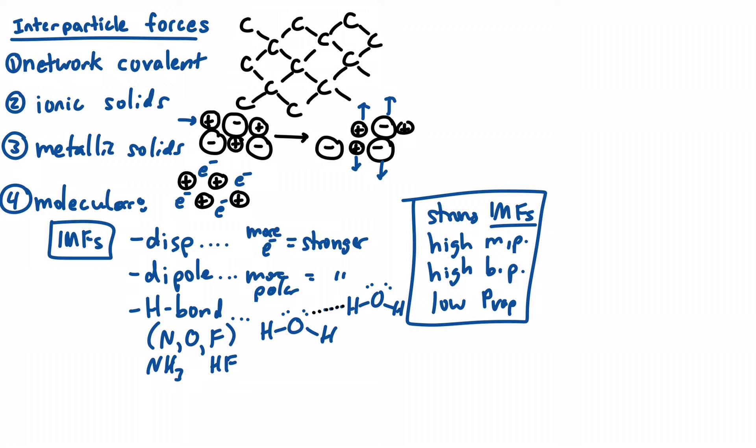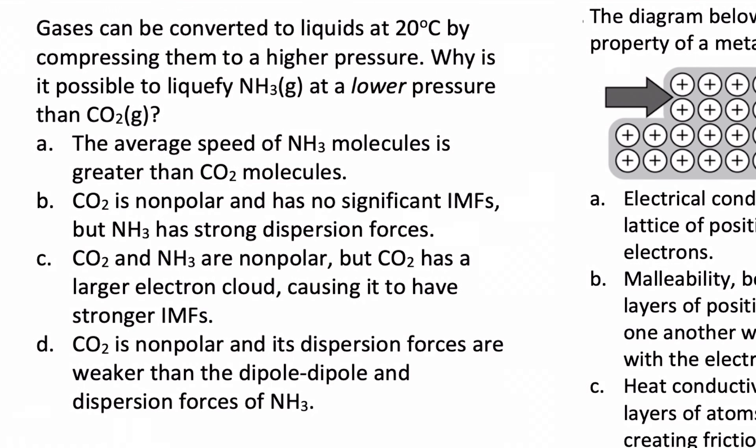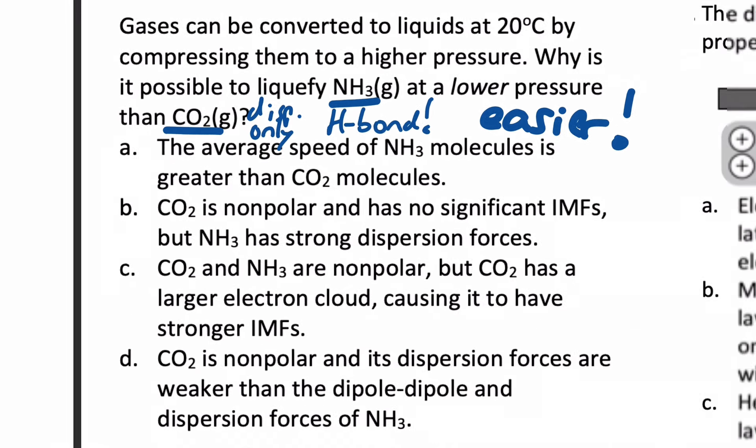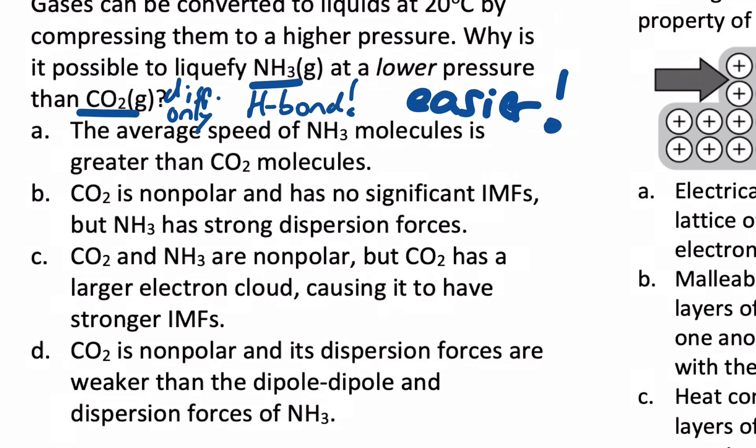Okay, this is such a qualitative topic that I feel like it's worthwhile just to go do some practice problems, but that's a crash rundown in what we mean by interparticle forces. So let's look at some questions. Firstly, gases can be converted to liquids at 20 degrees by compressing them to a higher pressure. That's true. Why is it possible to liquefy ammonia at a lower pressure than carbon dioxide? In other words, it's easier to liquefy ammonia. That's what that means. I don't need to compress it as much. Ammonia molecules want to stick together, and if I think about what might be the answer without even looking at the choices, I consider ammonia versus CO2. Ammonia can H-bond, but CO2 can't. CO2 has dispersion only. Ammonia molecules want to stick to each other.